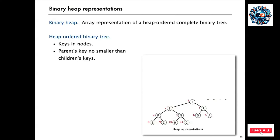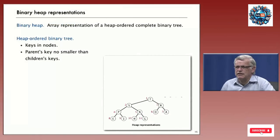The way we're going to use complete binary trees to implement priority queues is, first of all, to associate information with each node — we'll put our keys in the nodes. We're also going to represent it with an array. When we start putting the keys in the nodes, we're going to impose one more condition called heap ordering: the parent's key is no smaller than its children's key, and that's true for every node in the tree.